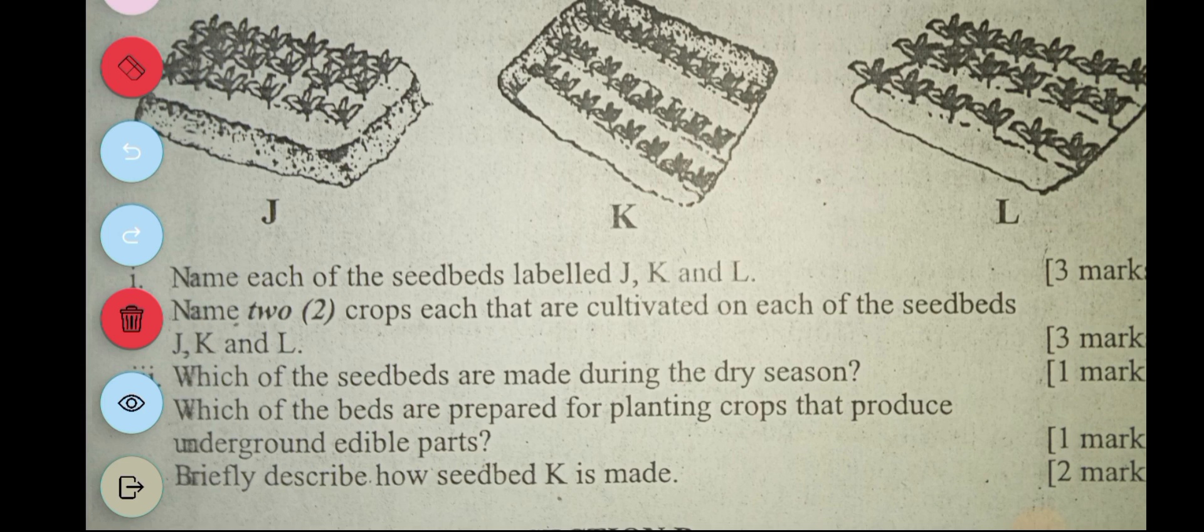The next question says: which of the beds are prepared for planting crops that produce underground edibles? So the answer to this is J, which is the raised bed.